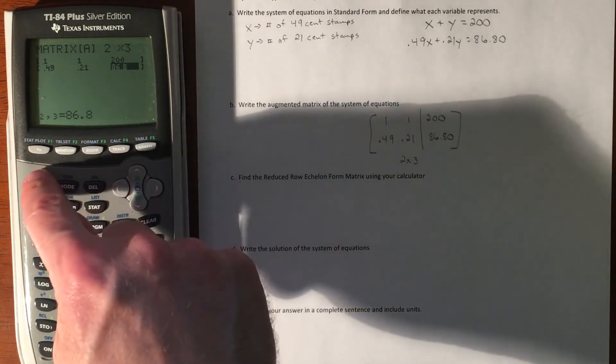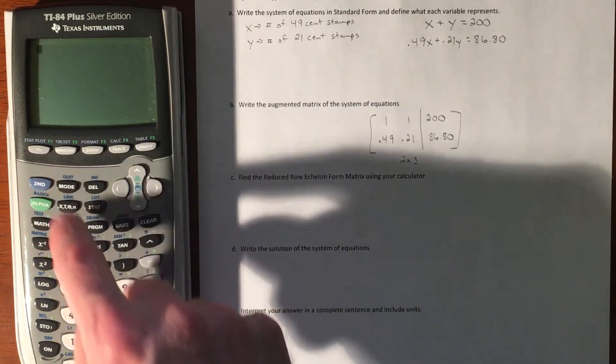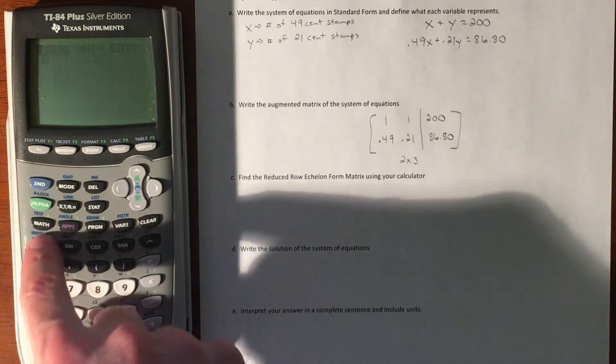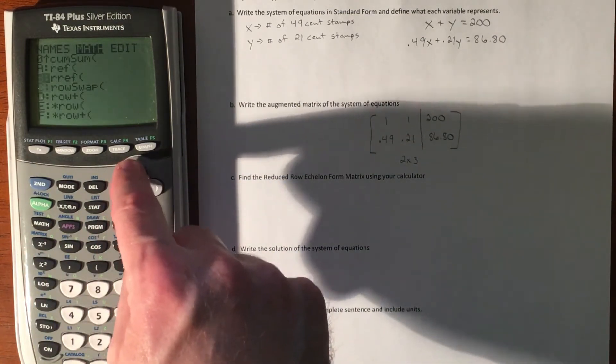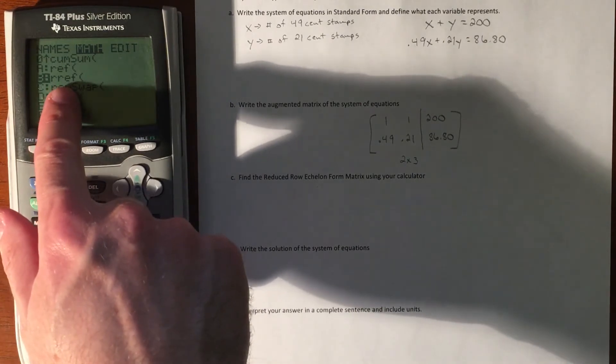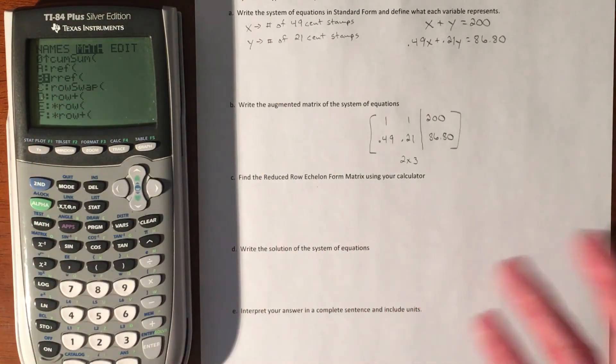We're going to quit out of that and go to Math, reduced row echelon form, which is basically going to do elimination for us without us having to go through the math.